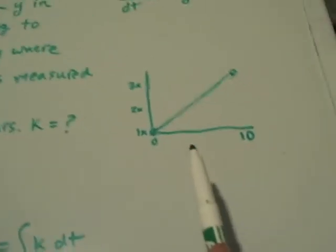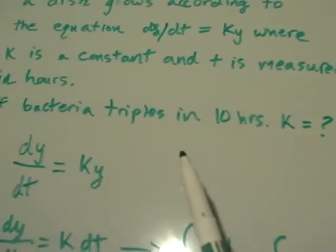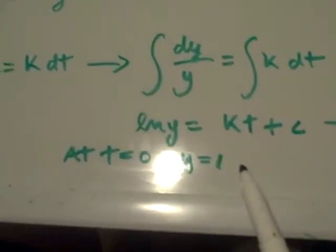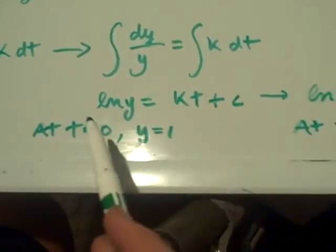But now, just as they said in the problem, the bacteria triples in 10 hours. So when it was 1, when it's 3, 3 times that, it's going to be 10. So instead of being 1 and 0, it's now 3 and 10.